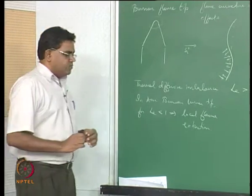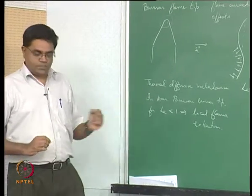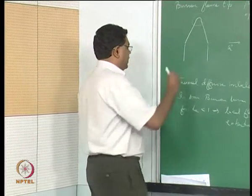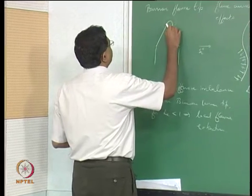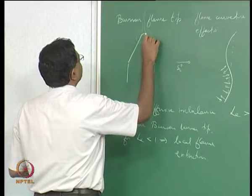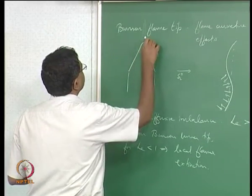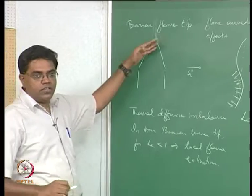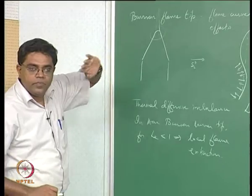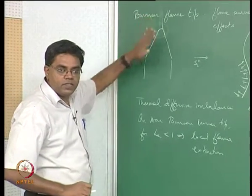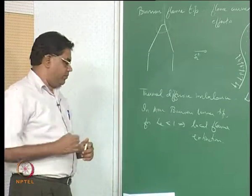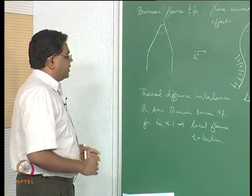Sometimes you do see flames that have a hole in the middle — the flame keeps going up instead of turning around, and I draw it with a lighter line, indicating a lesser burning intensity progressively and extinction there. So you have a hole in the flame. It is not that you need Le < 1 for this hole; there is also one more effect to think about. The first was the thermal-diffusive imbalance; the second is the density jump across the flame.